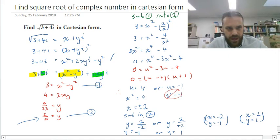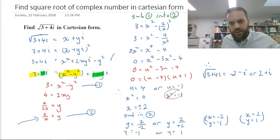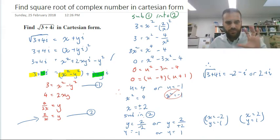Alright, so now we just need to go back to our question. Find the square root of 3 plus 4i in Cartesian form. We said that the square root of 3 plus 4i in Cartesian form was going to be x plus yi. Therefore, the square root of 3 plus 4i is equal to negative 2 minus 1i so just negative 2 minus i, or positive 2 plus 1i. Alright, there's our two answers. This question, it feels maybe a little more convoluted than what you'll see in the textbook but I think it's probably a more logical way to solve it.